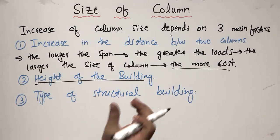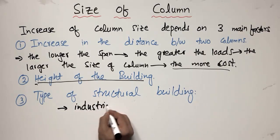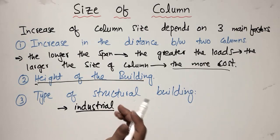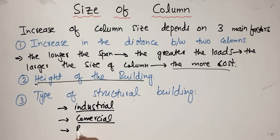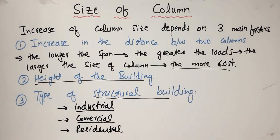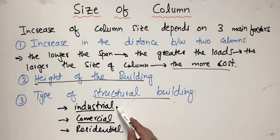The size of the column also depends on the type of structural building. Depending on your construction type — industrial building, commercial building, or residential building — there are different requirements for column size. If you are using a multi-storey high-rise building, the column size is different from a normal residential building. An industrial building may require a larger column size than commercial or residential buildings.